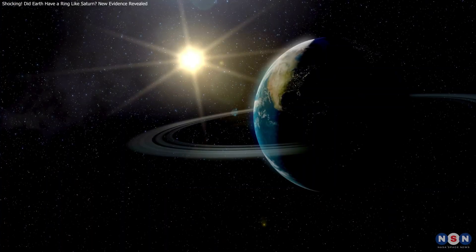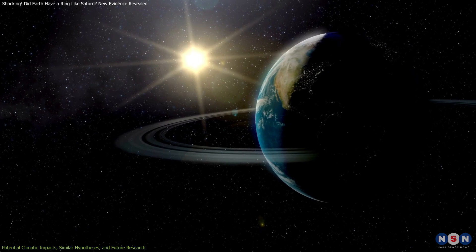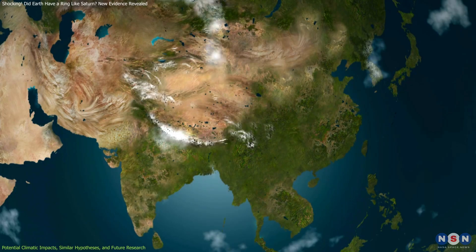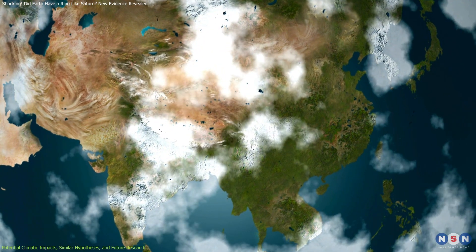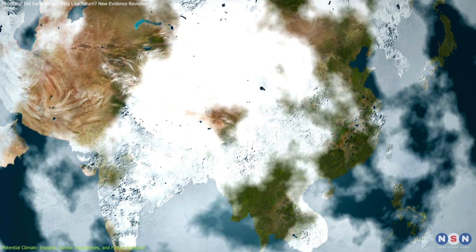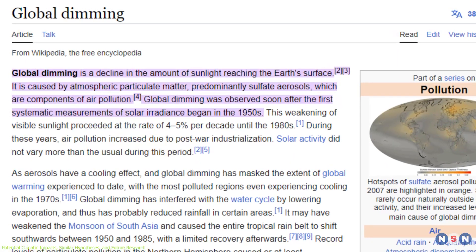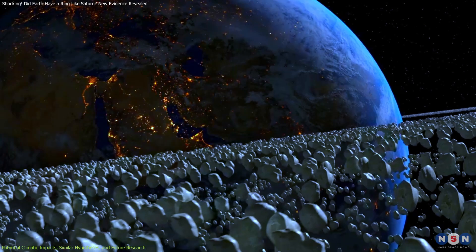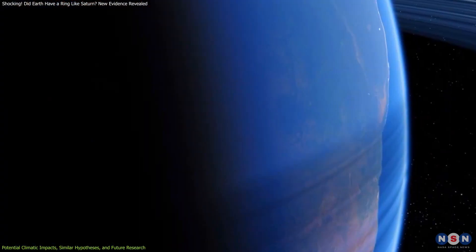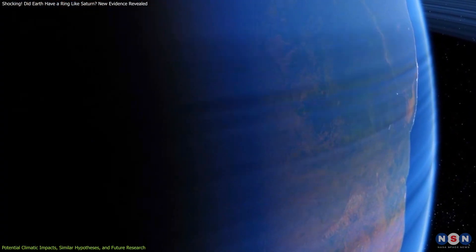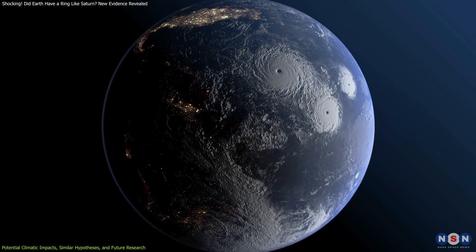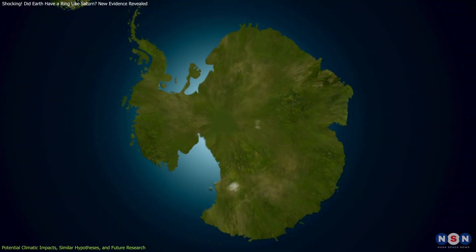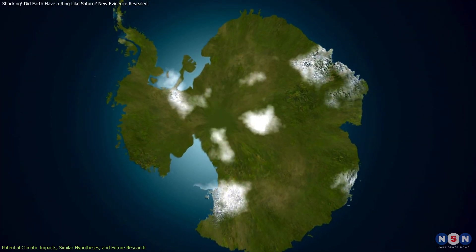If Earth did indeed have a ring of debris orbiting it for millions of years, the shadow cast by this ring could have led to significant cooling, creating some of the coldest conditions Earth has experienced in the last 500 million years. This concept aligns with the idea of global dimming, where particulates in the atmosphere, or in this case a ring of debris, block out sunlight and lead to cooler global temperatures. Such a phenomenon could explain some of the climatic shifts seen in the Ordovician period, particularly the rapid onset of glaciation.